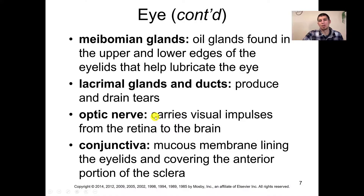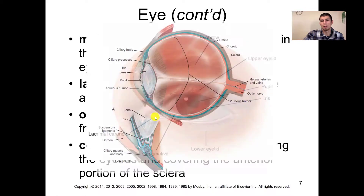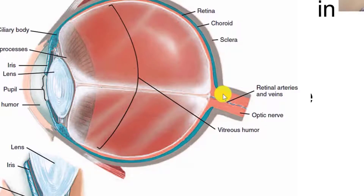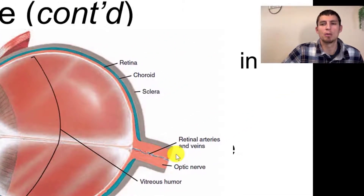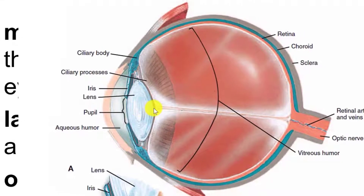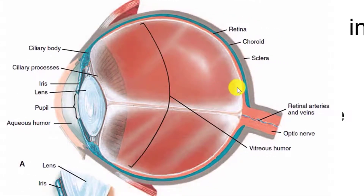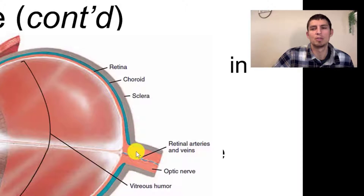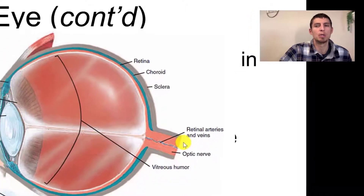The optic nerve is what carries the visual impulses from the retina to the brain. Once an image is received by the retina, those visual images are transferred to the brain via the optic nerve. It's almost like an analog-to-digital conversion — the retina essentially receives that analog vision signal and converts it to a digital signal to transmit back to the brain via the optic nerve.